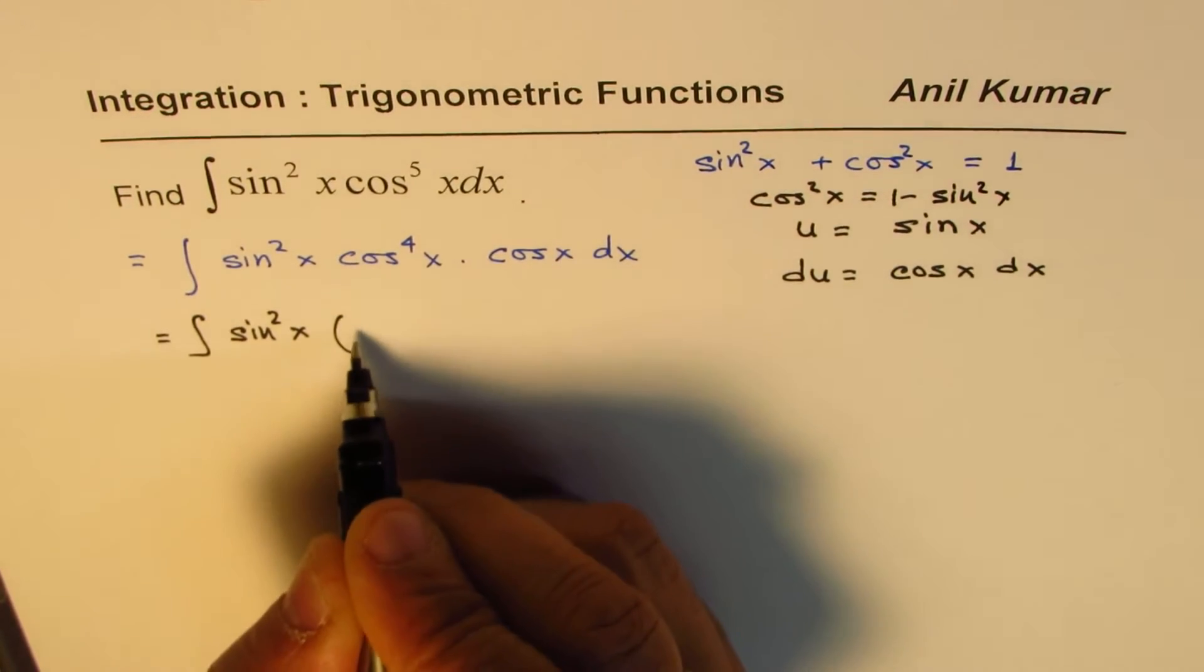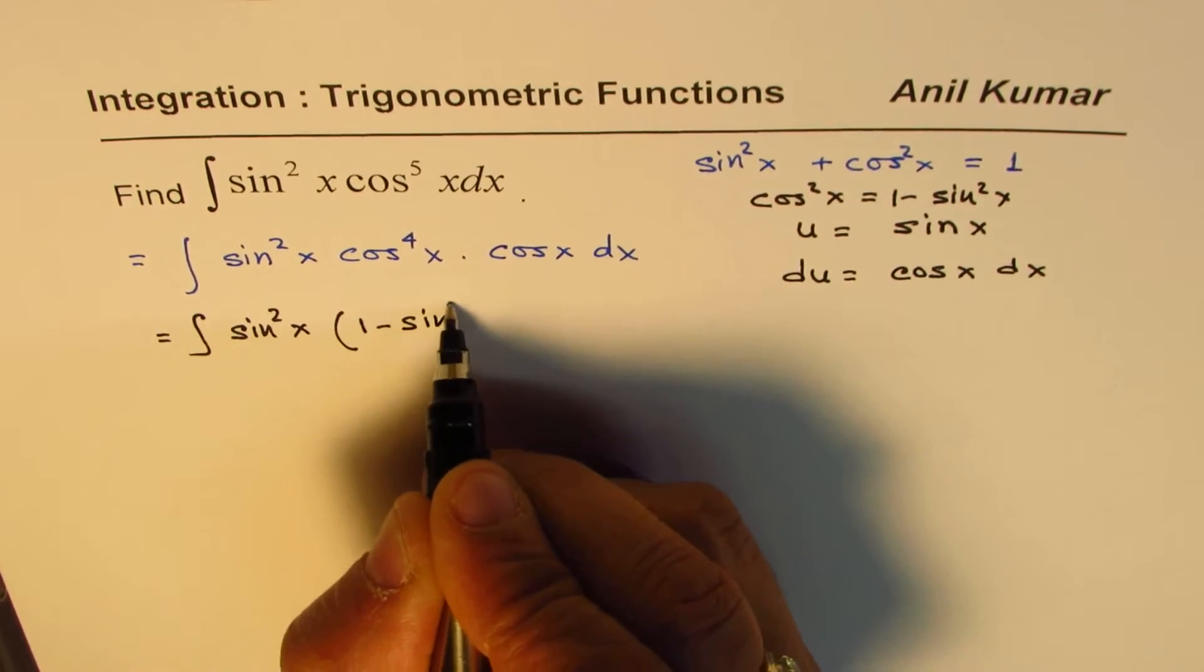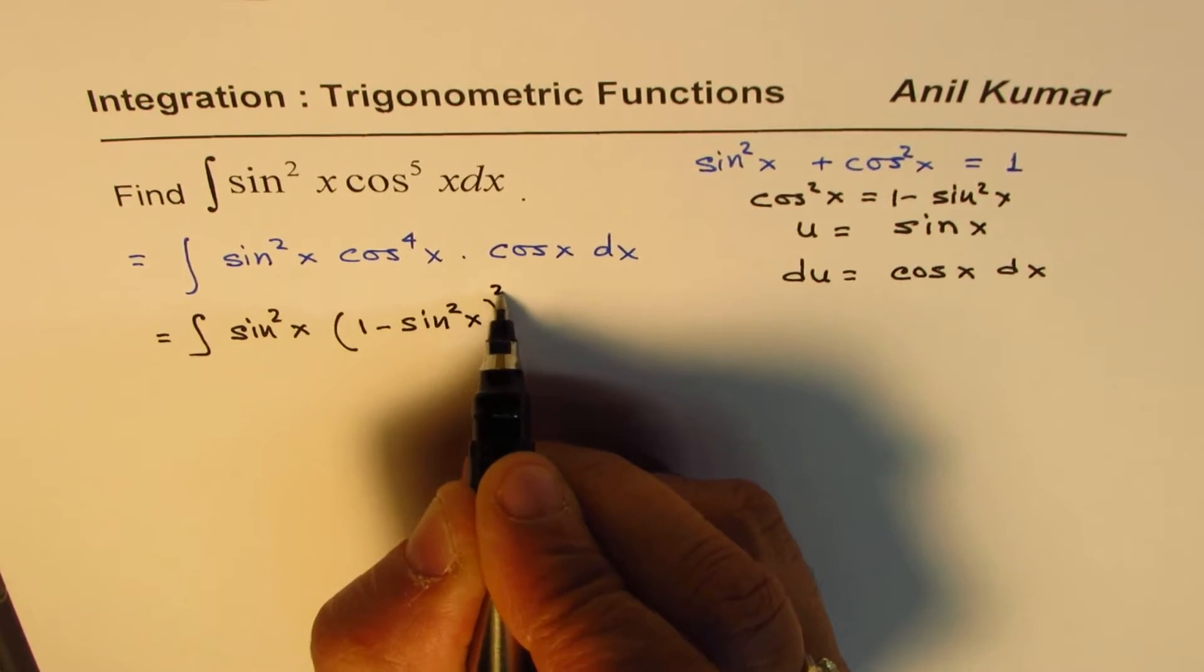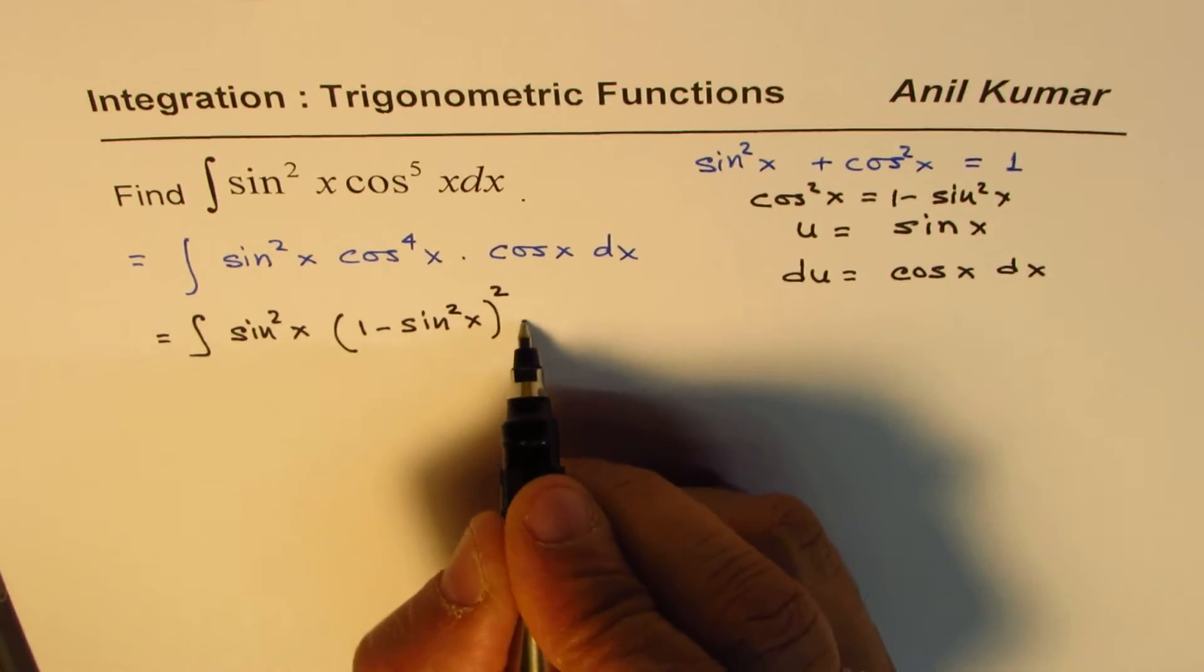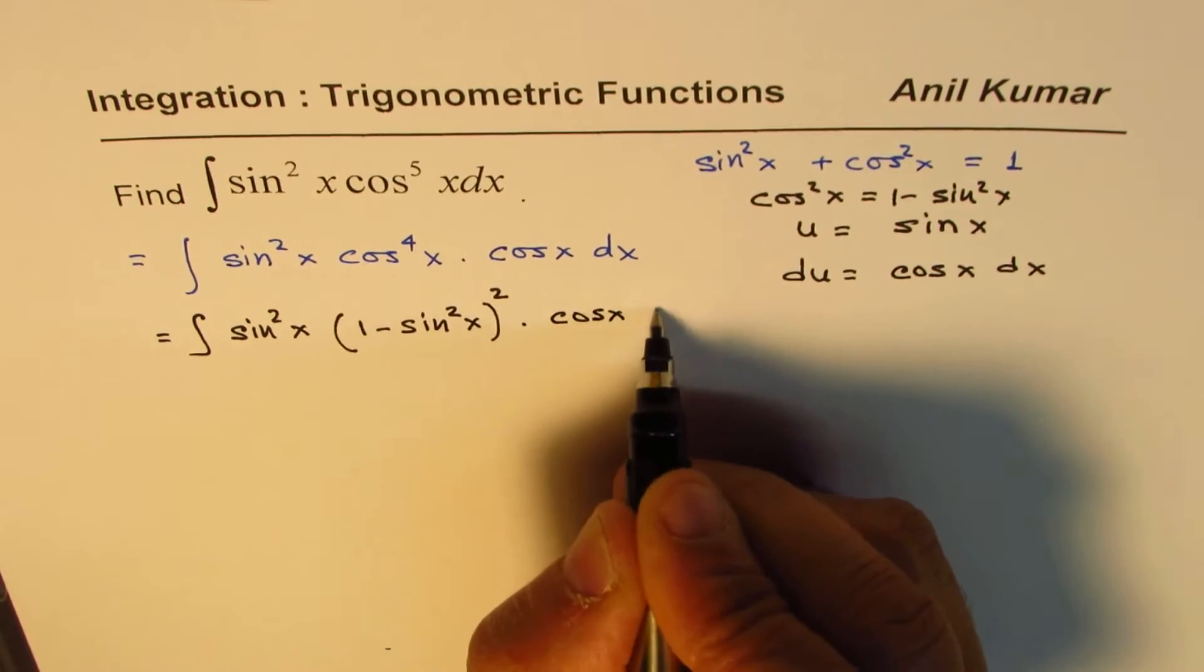So we will replace this with 1 minus sine square x, since it is to the power of 4, times cos x dx.